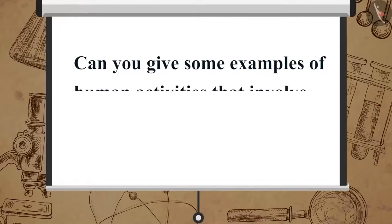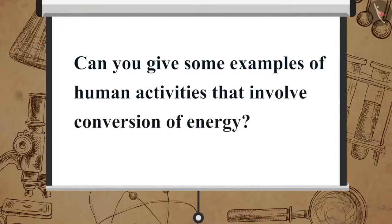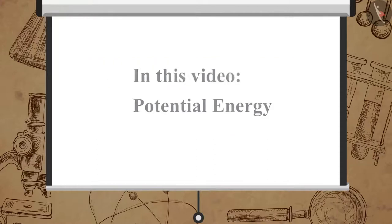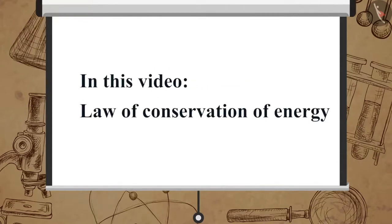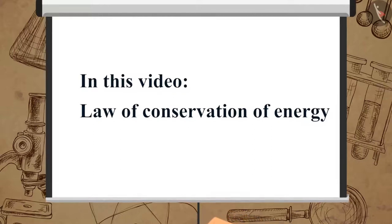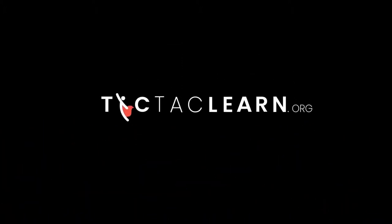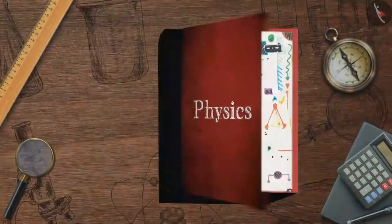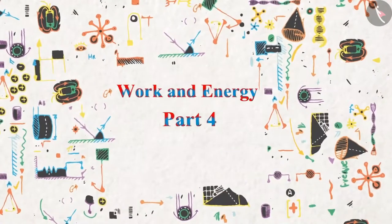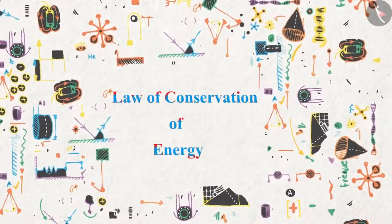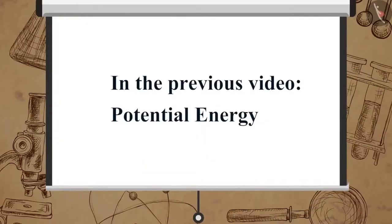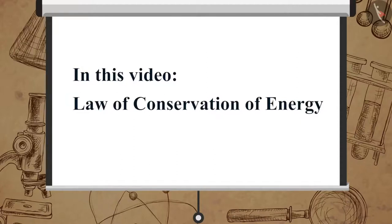Now can you give some examples of human activities that involve conversion of energy? In this video we learned about potential energy. In the next video we will learn about the law of conservation of energy. Work and energy, part 4: law of conservation of energy. In the previous video we learned about potential energy; in this video we will learn about the law of conservation of energy.